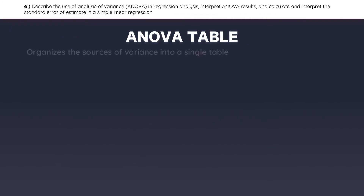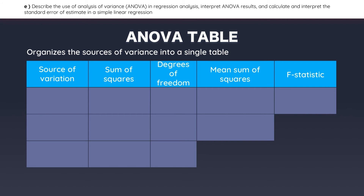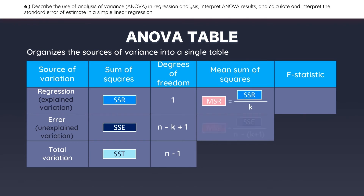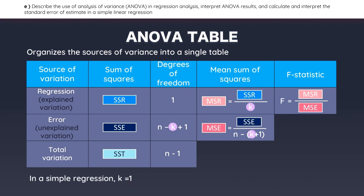The ANOVA table organizes the sources of variance into a single table. It gives you the sum of squares regression — the explained variation — the sum of squares error — the unexplained variation — and the sum of squares total — the total variation. The table also gives the degrees of freedom for each measure, along with the MSR, the MSE, and the F-statistic. For simple linear regressions, k equals 1 because there's only one independent variable, so let's plug in 1 instead of k to simplify the formulas.